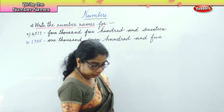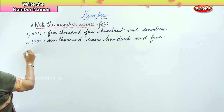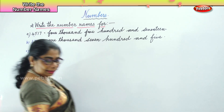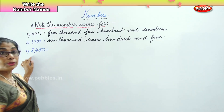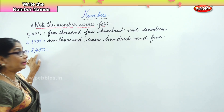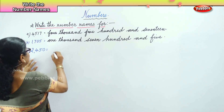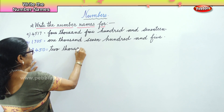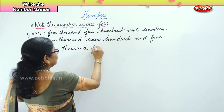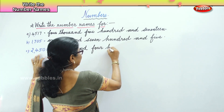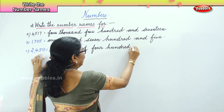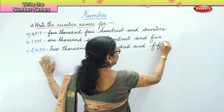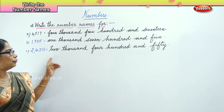The next number is 2450. Read that number to write its name. Two thousand — good. Four hundred and fifty — very good. Two thousand four hundred and fifty.